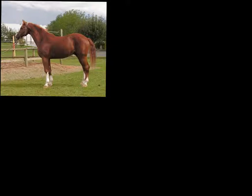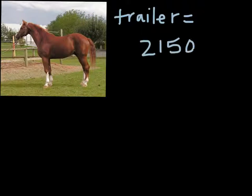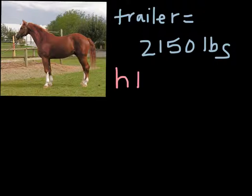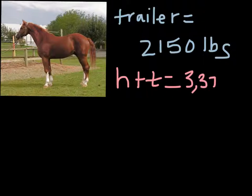Now let's apply this idea of the addition and subtraction properties of equality to solving a real world problem. One method used for weighing a horse is to put it on a trailer of known weight and then weigh the horse and the trailer together on a truck scale. The weight of the trailer alone is 2,150 pounds. The combined weight of the horse plus the trailer is 3,375 pounds. So what is the weight of the horse?